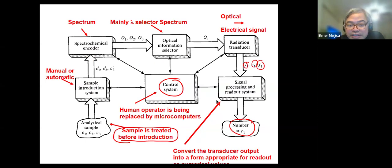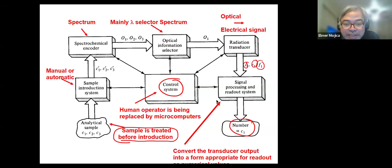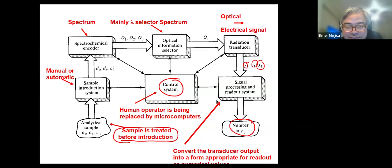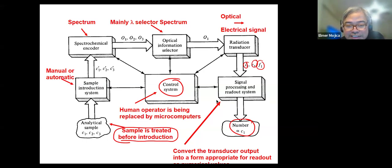You have a sample introduction system that presents the sample to the encoding system that converts concentrations 1, 2, and 3 to optical signals 1, 2, and 3. Then you select only one of them, which is presented to the optical information selector, and then put in a transducer that will convert it into an electrical signal.